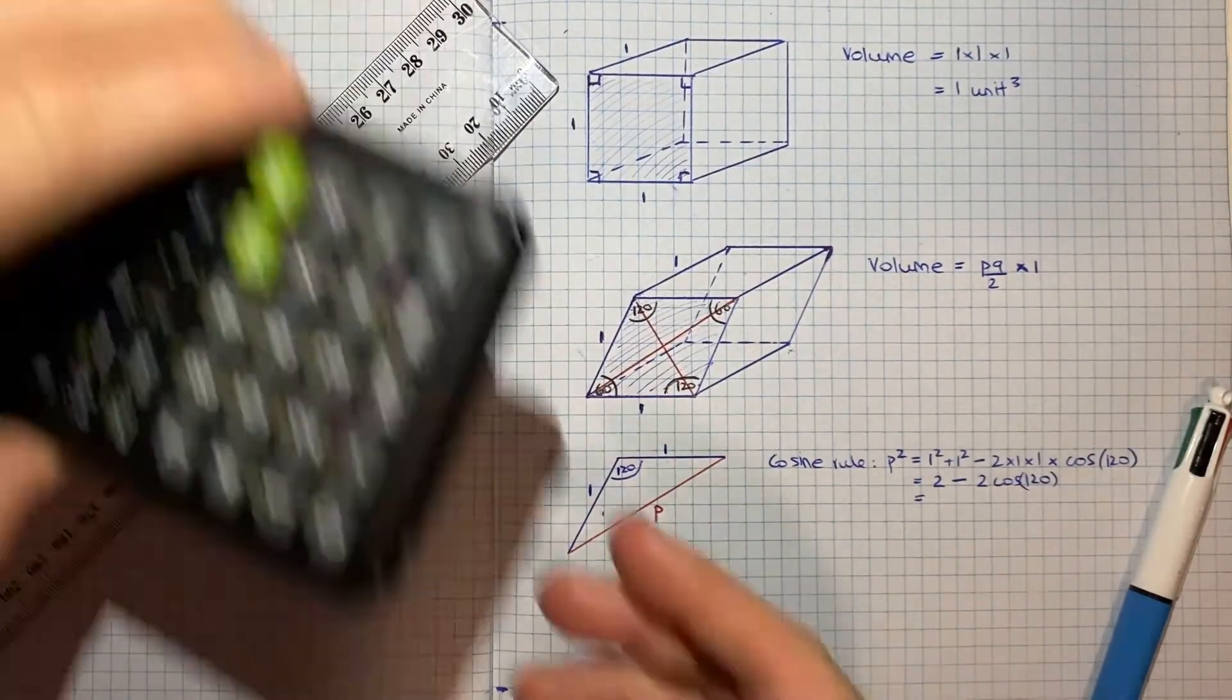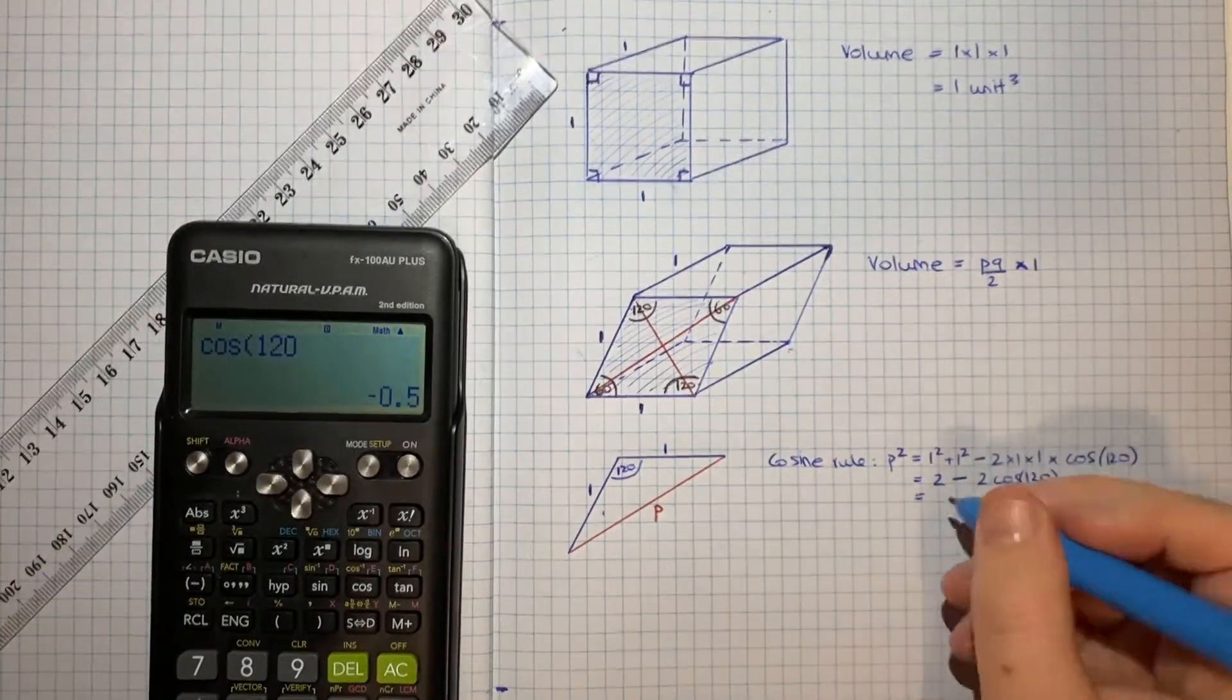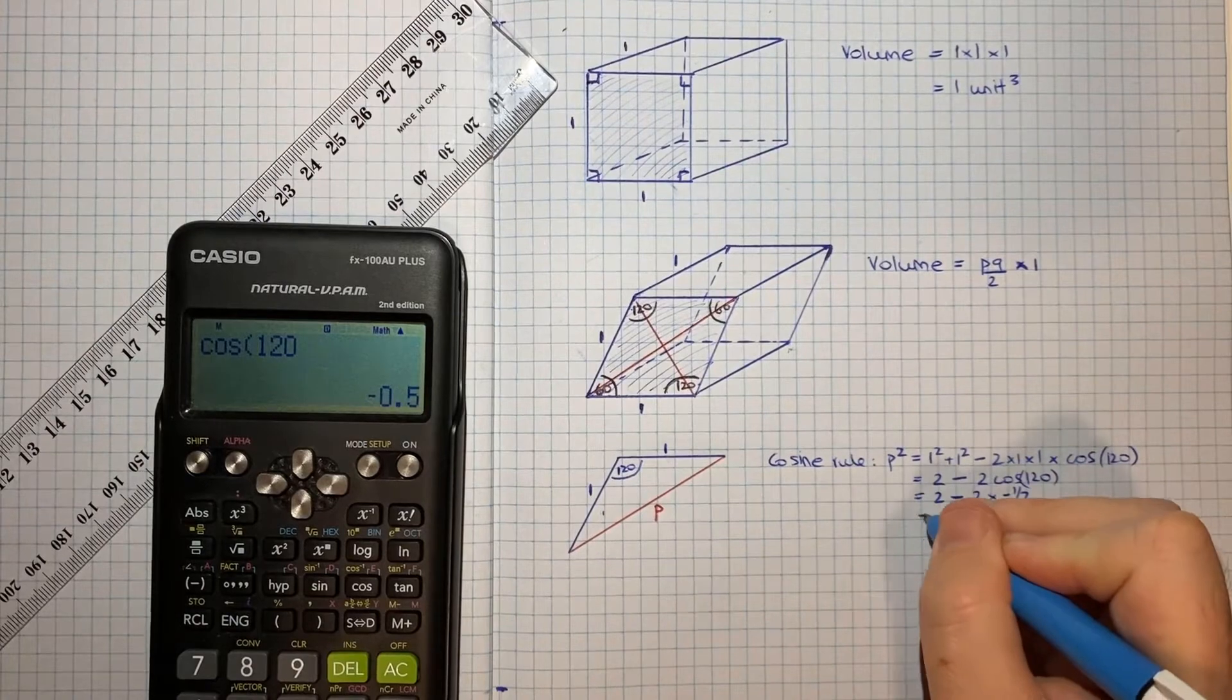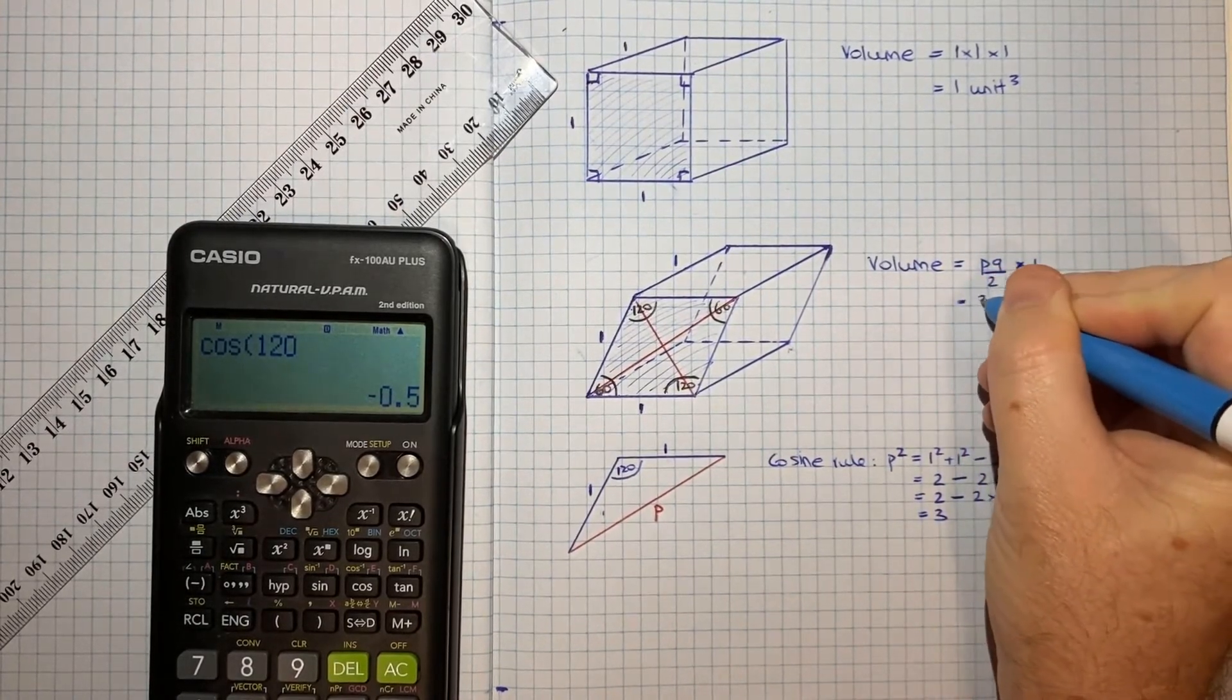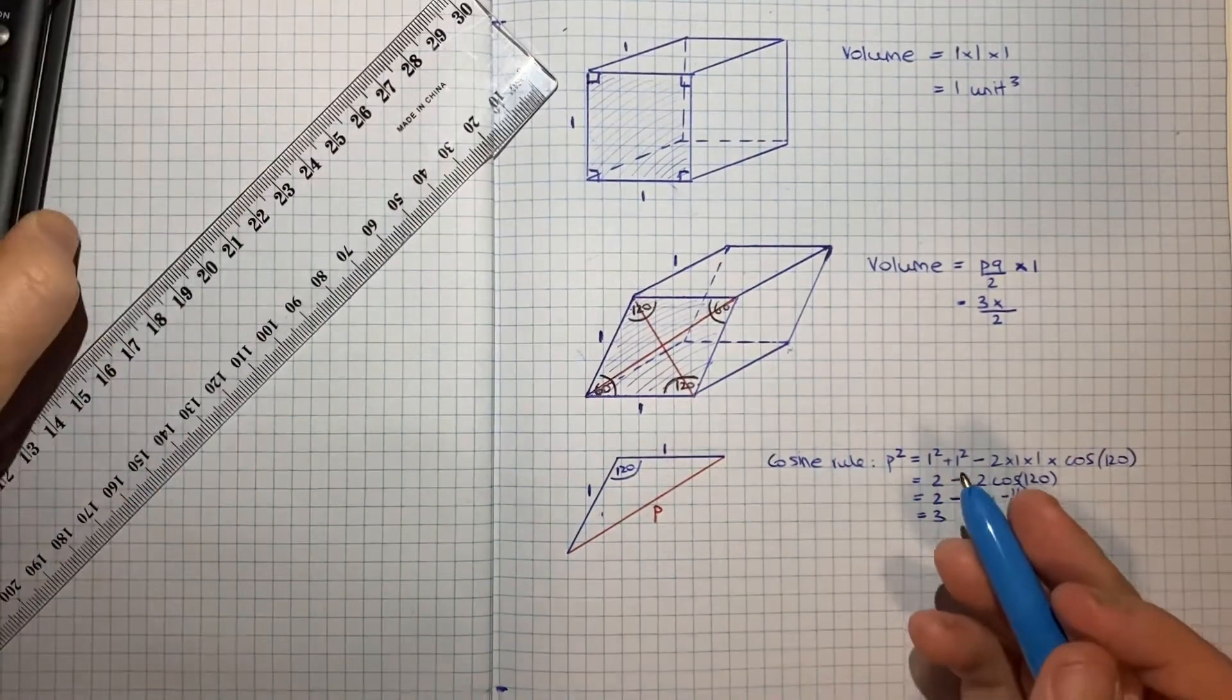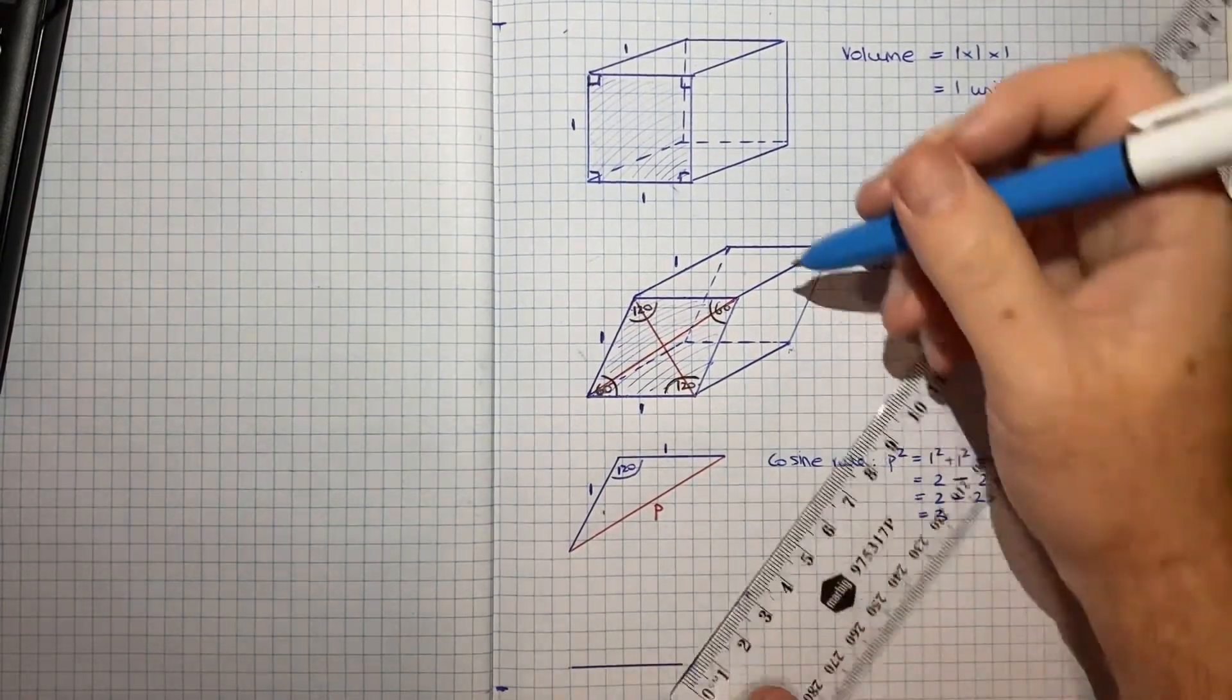Which will be, if I plug cos 120 into my calculator, cos 120 is negative a half. So 2 minus 2 times negative a half would be 2 plus 1, which would be 3. So we've got P squared is equal to 3, so this will be root 3 times something on 2 times 1.